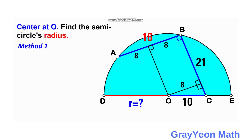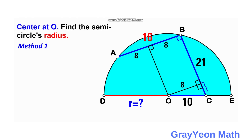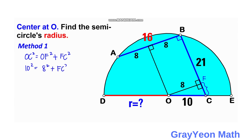Next we find the length from O to C. Let's call the foot of the perpendicular as point F, forming triangle OFC. By the Pythagorean theorem: OC squared equals OF squared plus FC squared.